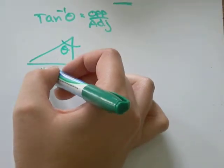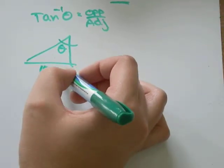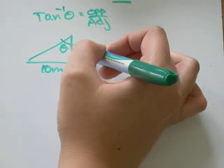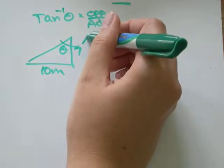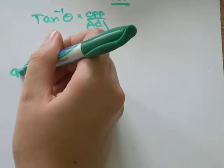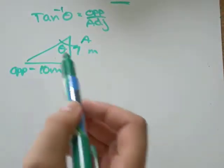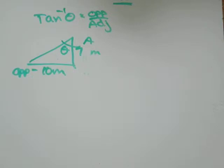Let's say that's theta. And we know the opposite side is 10 meters and the adjacent side is 7 meters. And we want to figure out what's the measure of theta. Is it 25 degrees, 30 degrees? We don't know. It's something.